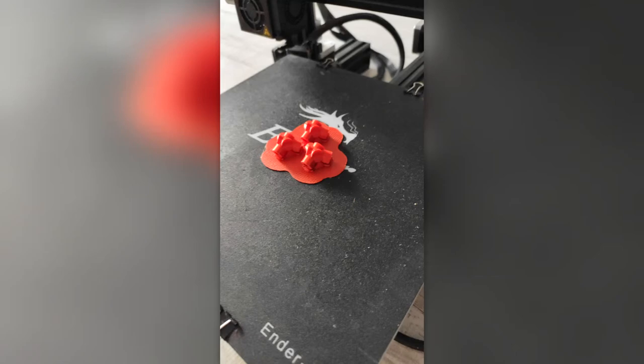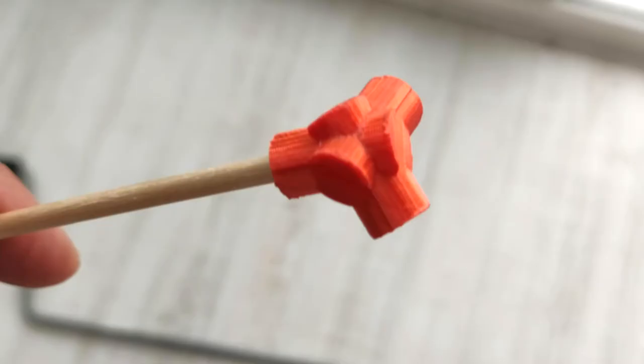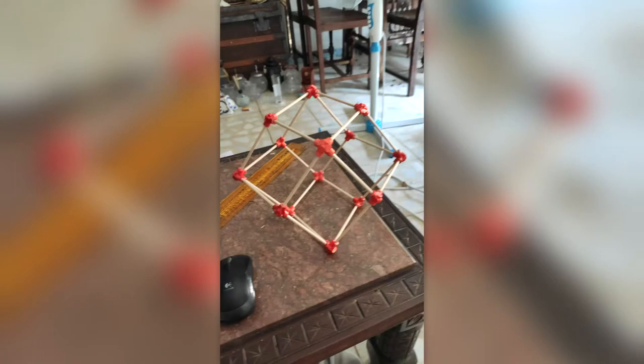But then it occurred to me, you don't need a 3D printer to make long, thin beams. You can buy those. Really, the only complicated parts of this structure are its corners. So I printed the corners and joined them with wooden dowels I bought from a craft store for just a couple of euros.